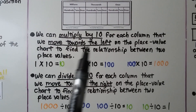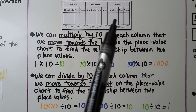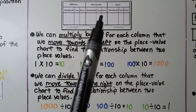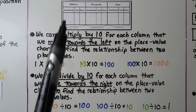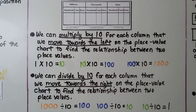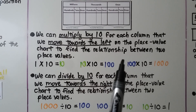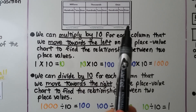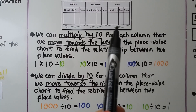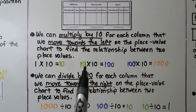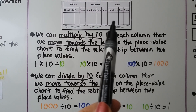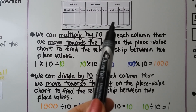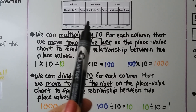Here we have a chart showing our place values: 1s, 10s, 100s, then thousands — 1,000, 10,000, 100,000 — then millions: 1,000,000, 10,000,000, 100,000,000. We can multiply by 10 for each column we move toward the left to find the relationship between two place values. So 1 times 10 is 10, 10 times 10 is 100, 100 times 10 is 1,000, and so on.